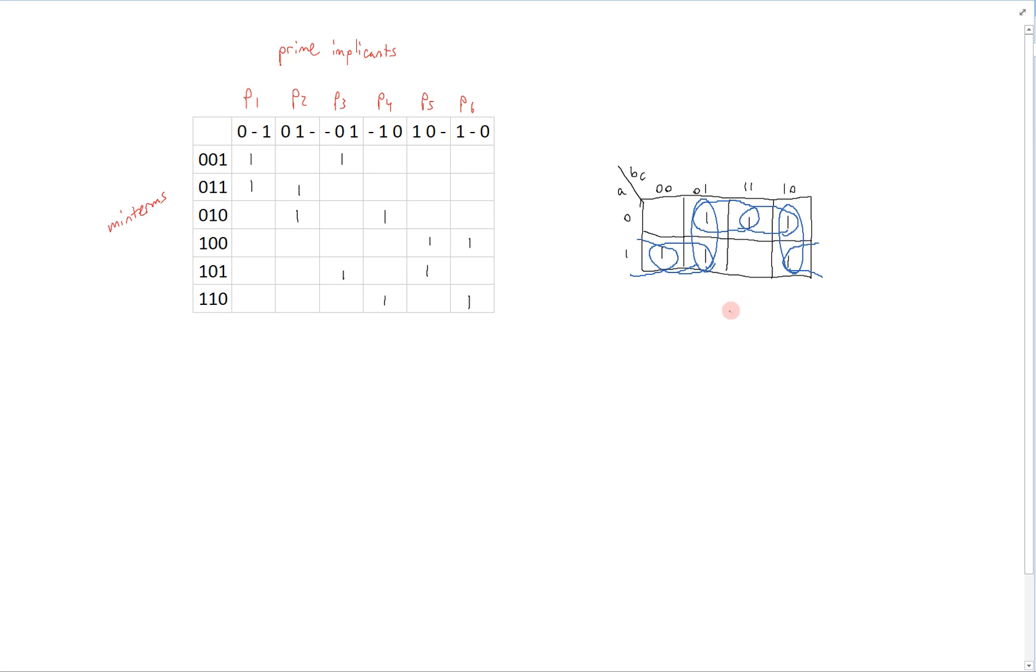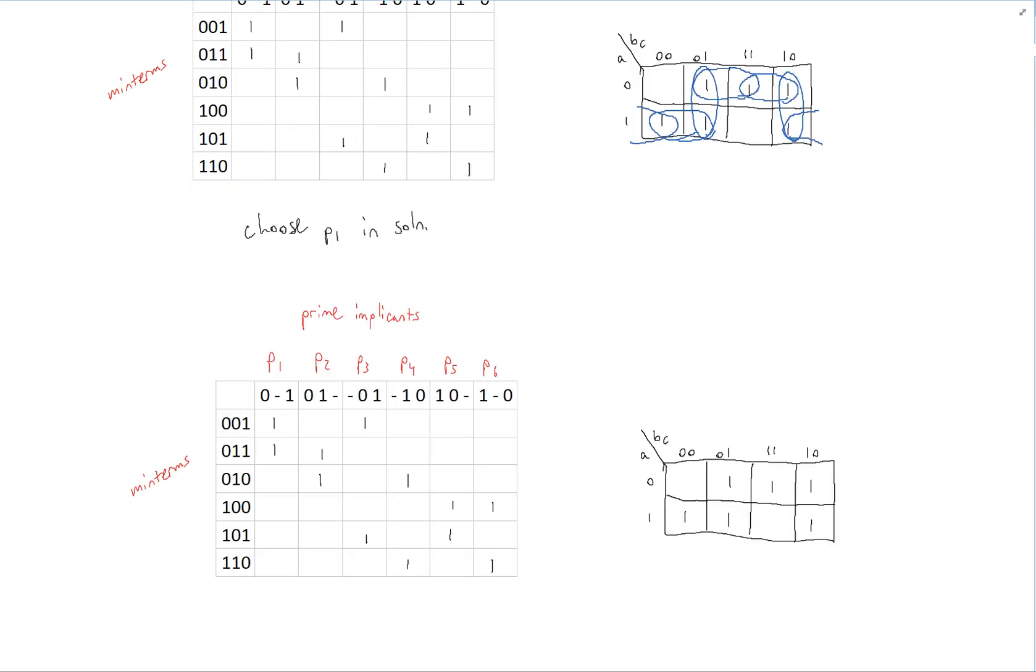Well, we have to choose one of these prime implicants to be in our solution, and we do this arbitrarily. In this case, we'll choose P1 to be in our solution. If we choose P1 to be in our solution, we can highlight that, and we can see that we can get rid of the first minterm and the second minterm, since they're both covered by this prime implicant, by P1.